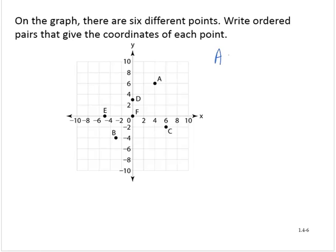All right, so point A has an x-coordinate. So remember, when we write ordered pairs, we always write them as the x-coordinate and then the y-coordinate,